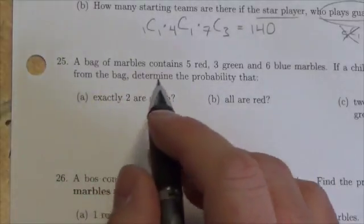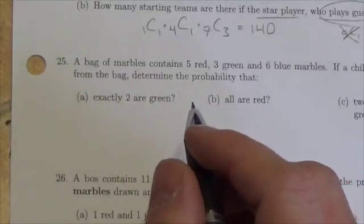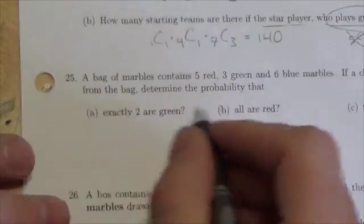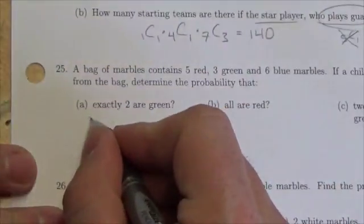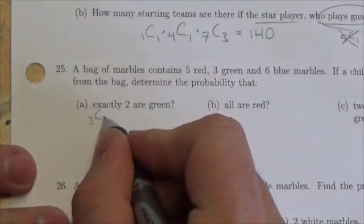...exactly two are green. Well, exactly two are green. We've got three green to choose from, we're going to choose two, and the reason we're using a combination here is because order is not really important.